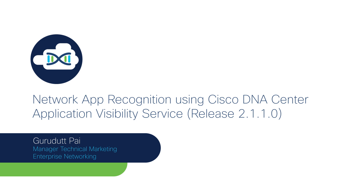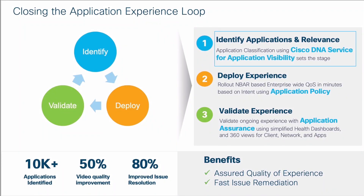When we talk about application experience from a DNA Center perspective, there are a couple of things that need to happen. The first is how you can have consistent classification or identification of applications end-to-end. This is critical because if you want to deploy a consistent QoS policy end-to-end, you want the classification to be consistent first. The second step is to use application policies to define intent-based QoS policies end-to-end. Once you've defined your QoS for business-critical applications, you want to know how your applications are performing and isolate any issues.